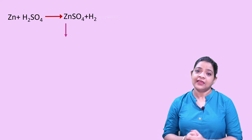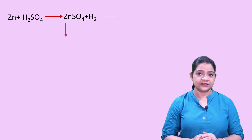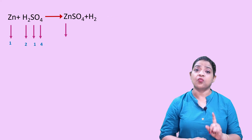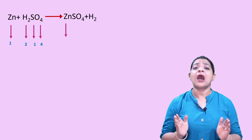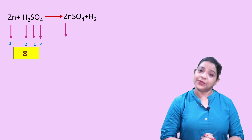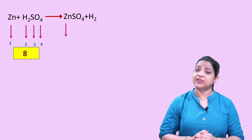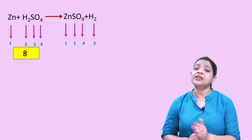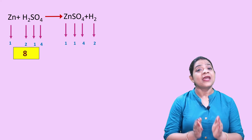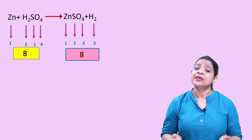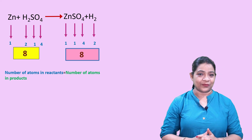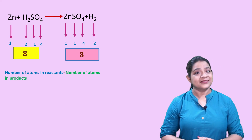Let's take one example. When zinc reacts with sulfuric acid, it gives zinc sulfate and hydrogen gas. So zinc is in the reactant side — zinc has one atom, hydrogen in the sulfuric acid has two atoms, sulfur has one atom, and oxygen has four atoms. So there are a total number of eight atoms in the reactant side. In the product side, zinc has one atom, sulfur has one atom, oxygen has four atoms, and hydrogen gives two atoms. So there are a total number of eight atoms in the product side.